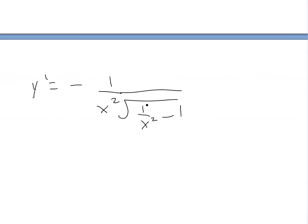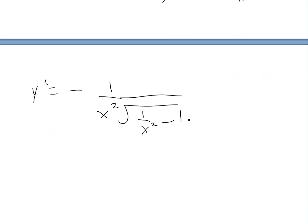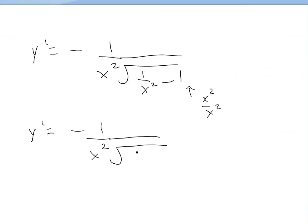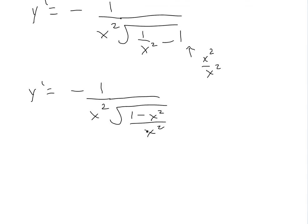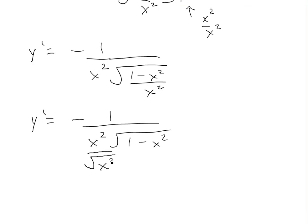We could stop here, but the calculus textbook simplifies further. To get a common denominator inside the square root, multiply 1 by x squared over x squared, so we get (1 minus x squared) over x squared inside the square root. Pulling x squared out of the square root gives x, so the denominator becomes x times the square root of 1 minus x squared.